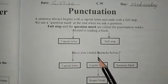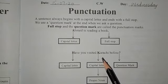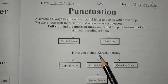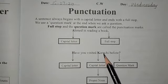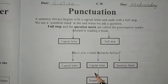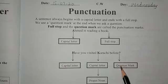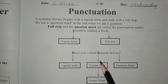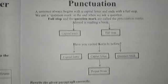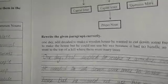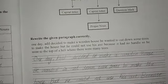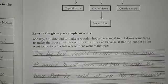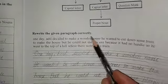At the beginning of sentences you will write capital letters, and at the end we use question marks because it's a question. Punctuation is a system of marks. Now let's do our next activity: Rewrite the given paragraph correctly.